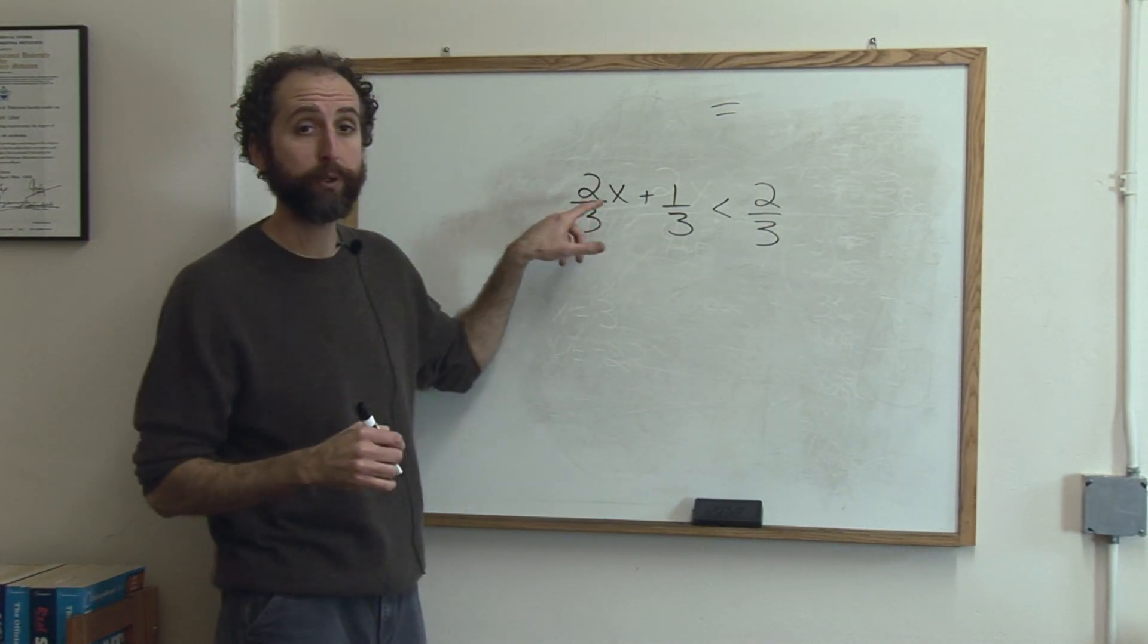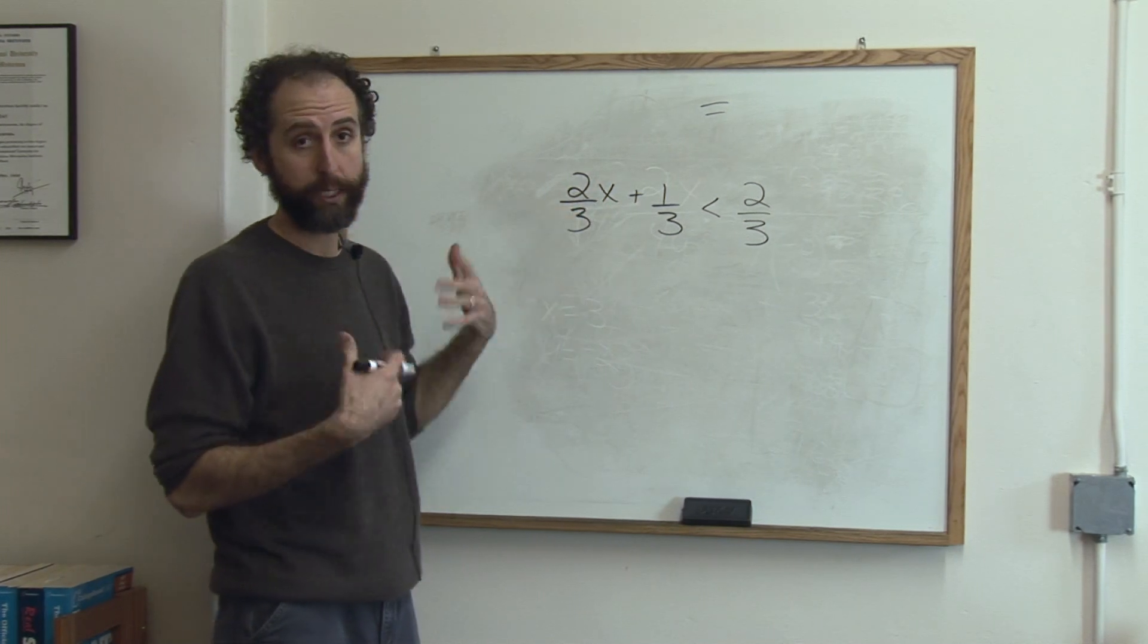So if we want to solve this, we're going to solve for x. It means get x alone. Solve for x means isolate x.